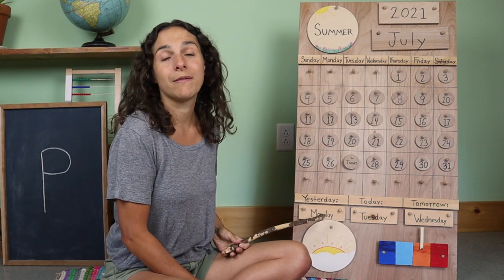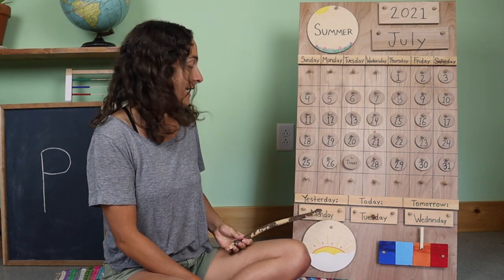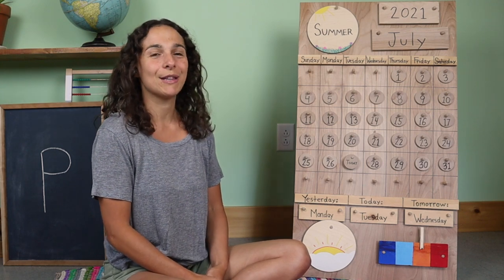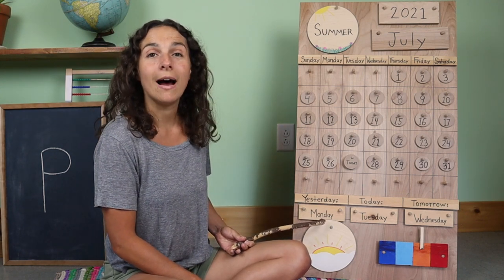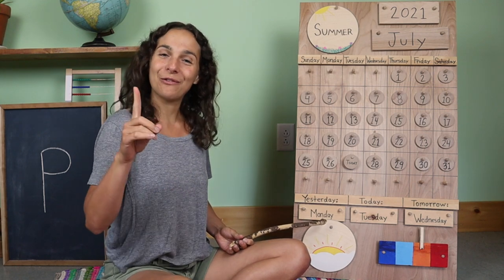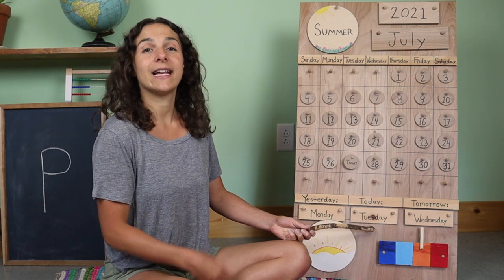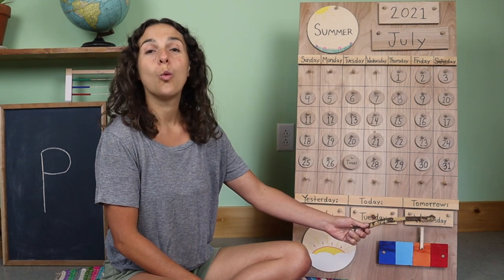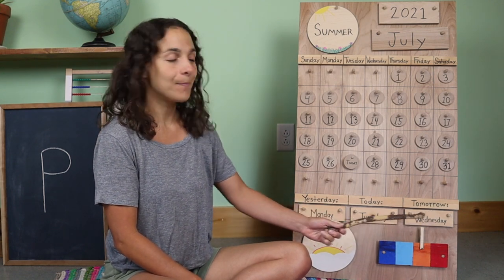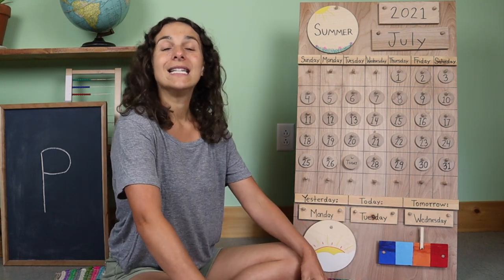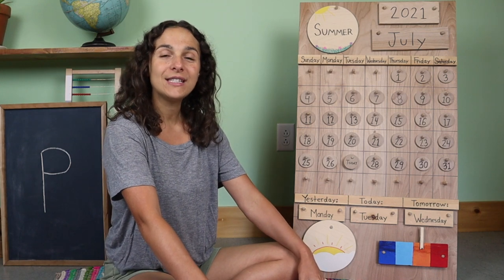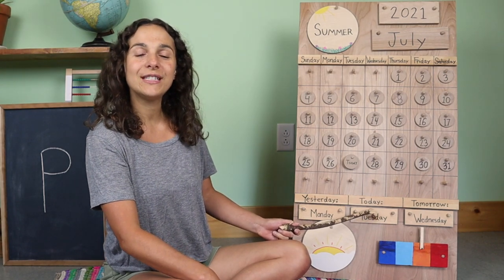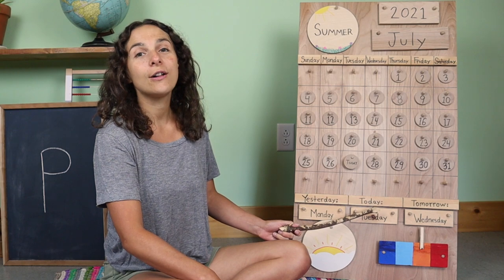Let's go down to the bottom of the chart and go over the days together. Listen carefully for the sound that the day starts with, and if you know what the day is, you can say it with me. Yesterday was M — Monday, the first day of the weekday. That means today is T — Tuesday. Tomorrow will be W — Wednesday. Let's go back and sing: Today is Tuesday, today is Tuesday, today is Tuesday all day long.